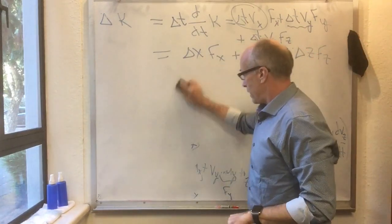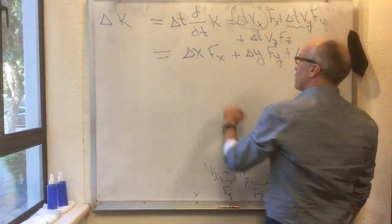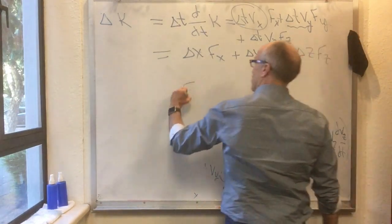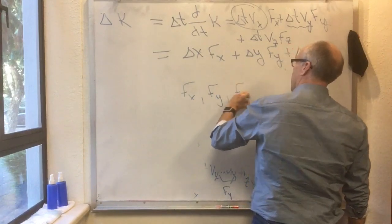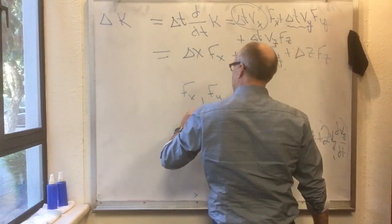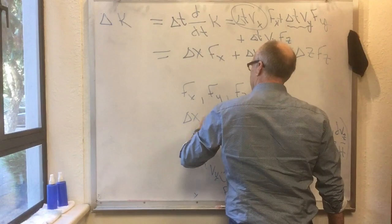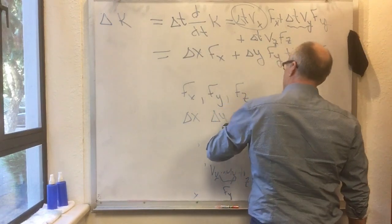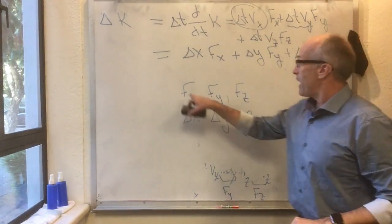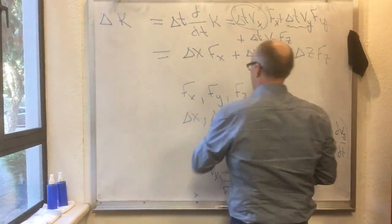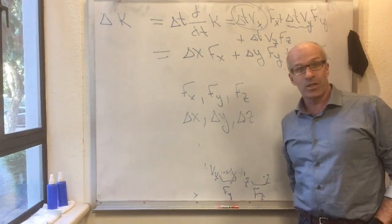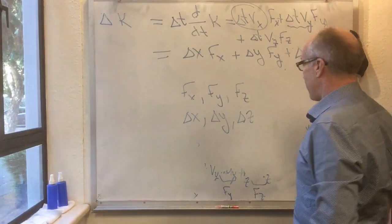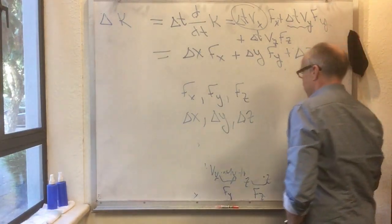We now know that if you take the force vector, which is fx, fy, fz, and you take the displacement vector, which is delta x, delta y, delta z, and you take fx delta x plus fy delta y plus fz delta z, you get the change in this thing that I'm calling k.